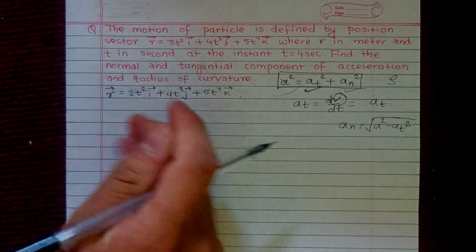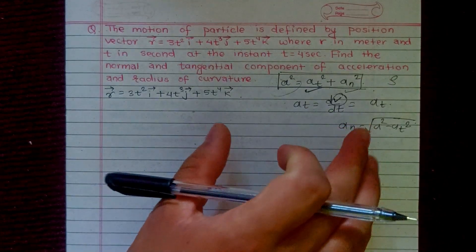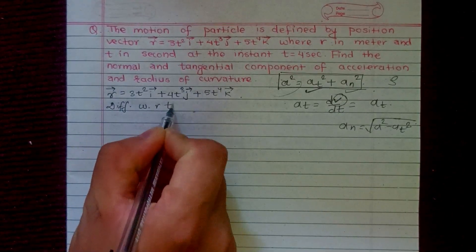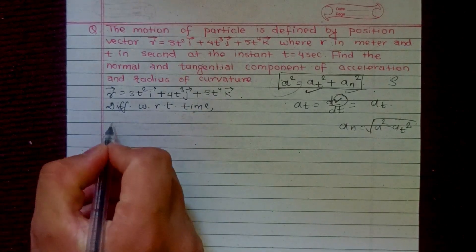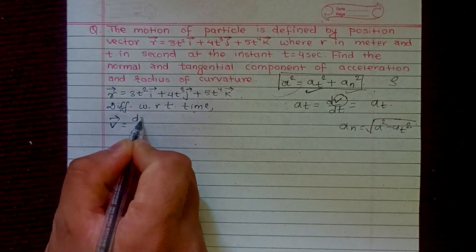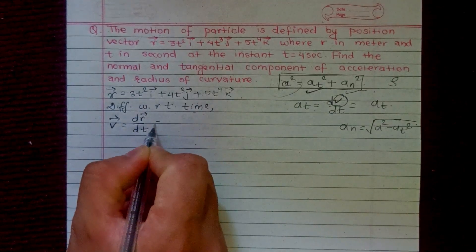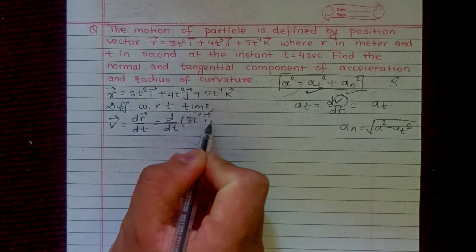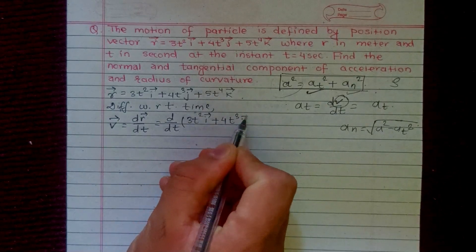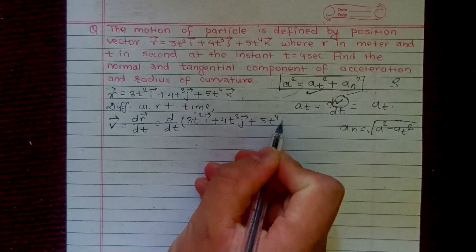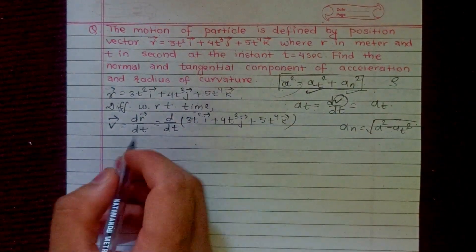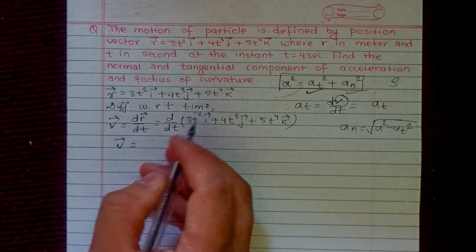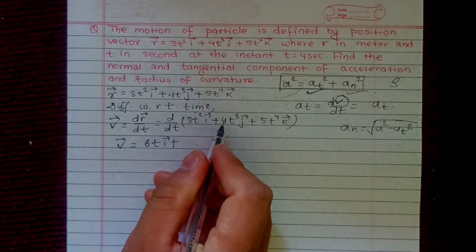We differentiate the position vector with respect to time to get the velocity. So velocity v = dr/dt = d/dt of (3t² i-vector plus 4t³ j-vector plus 5t⁴ k-vector).